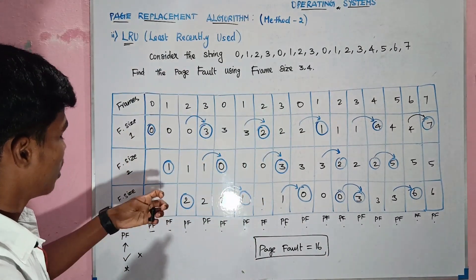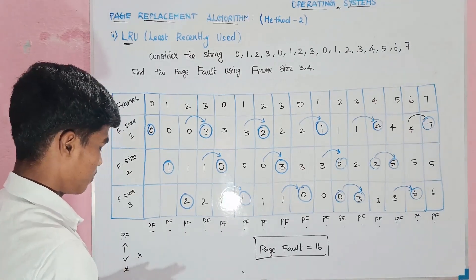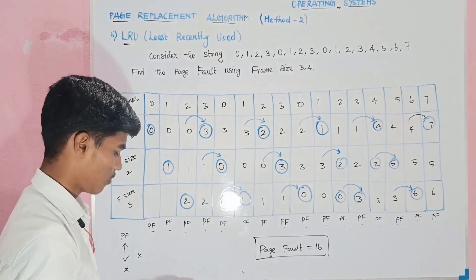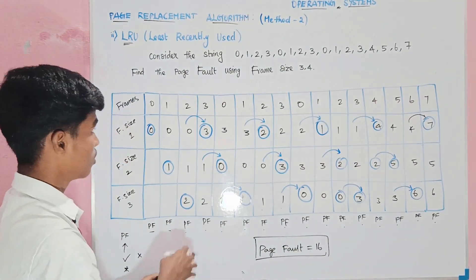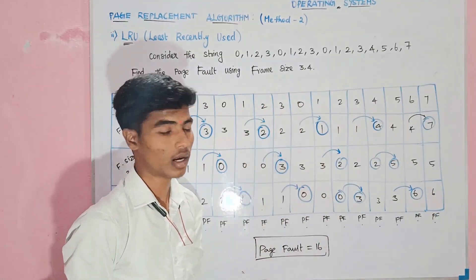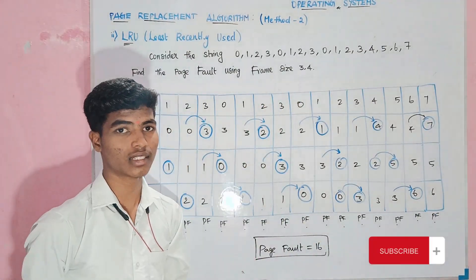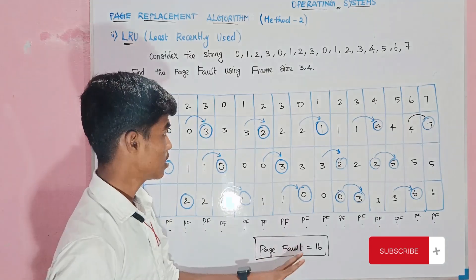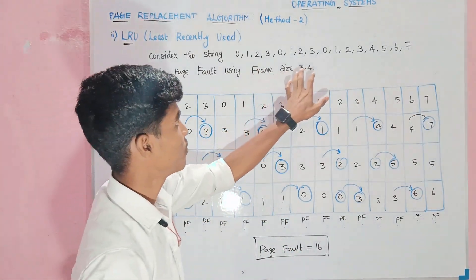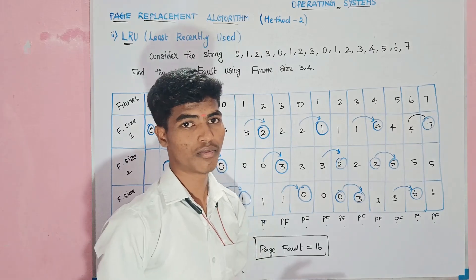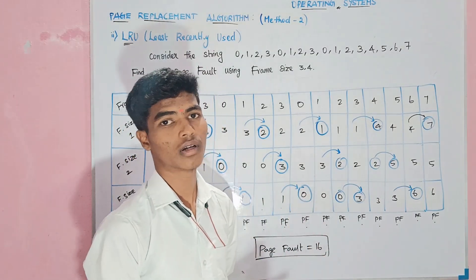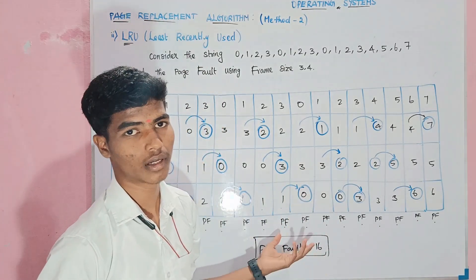If we use this method to keep the string, let us print the LRU list — the Least Recently Used method — using page frame size 3. Let's see page frame 1. Next, we find the saved value, and then we see page frame 3 and find the value of the data.